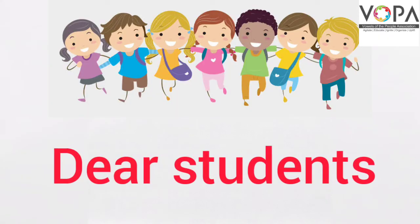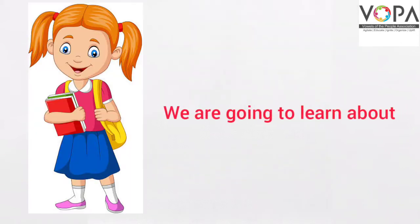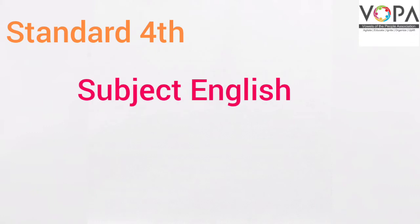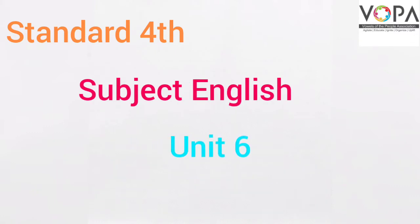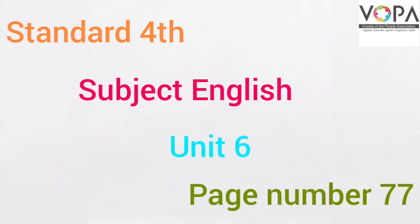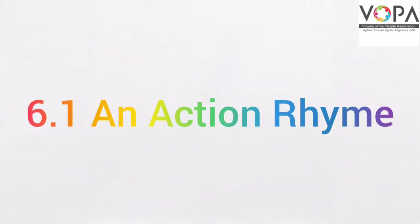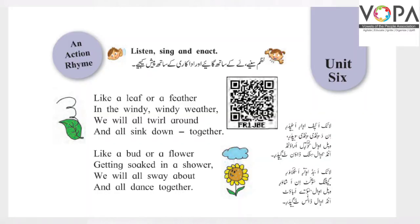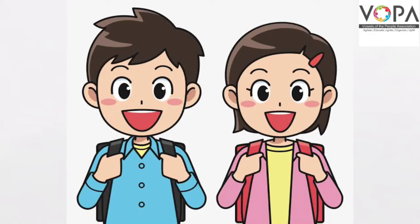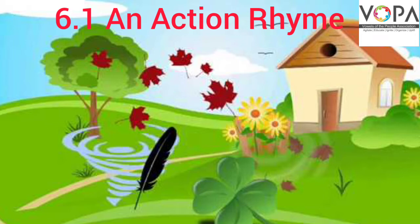Dear students, today we are going to learn about Standard 4, Subject English, Unit 6, page number 77. Our topic is action rhymes. Dear students, Unit 6 is beginning with a beautiful rhyme. Piyare bacho, Unit 6 ki shuruaat ek bahut hi khubsoorat nazm ke saath ho rahi hai.